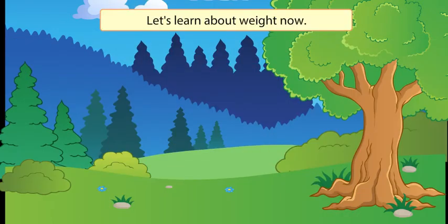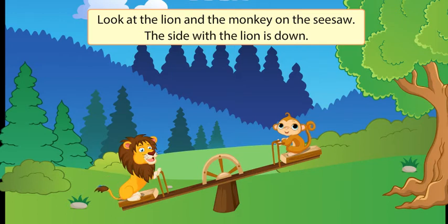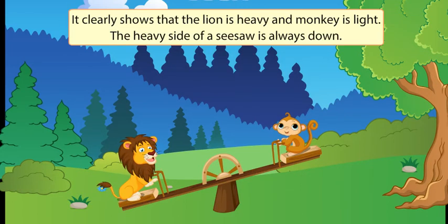Let's learn about weight now. Look at the lion and the monkey on the seesaw. The side with the lion is down. It clearly shows that the lion is heavy and monkey is light. The heavy side of a seesaw is always down.